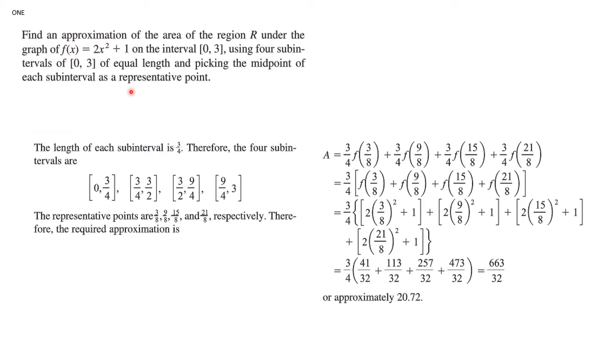Problem number one. You would find an approximation of the area under this region R under the graph of y equals f(x) = 2x² + 1 on the interval 0 to 3 using four subintervals of the interval 0 to 3 of equal length and picking the midpoint of each subinterval as a representative point. Well, the length of each subinterval is going to be three-fourths. Therefore, these are the subintervals we have, and the representative points are the midpoints of each of these intervals.